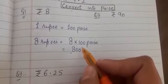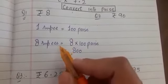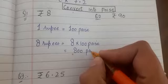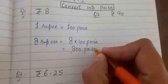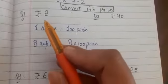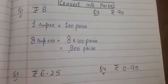Since by multiplying 100 the number changes into paise, so the answer is written as 800 paise. So 8 rupees makes 800 paise.